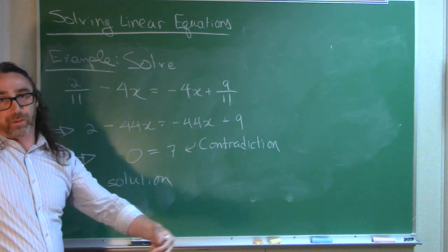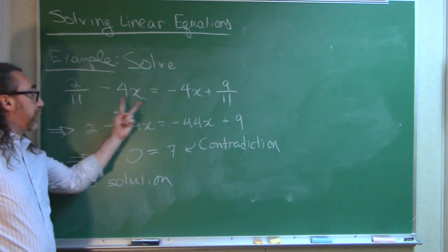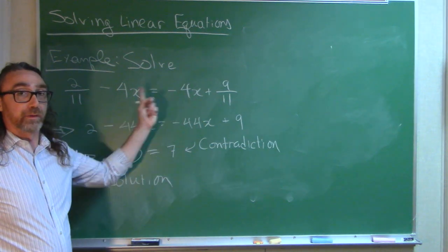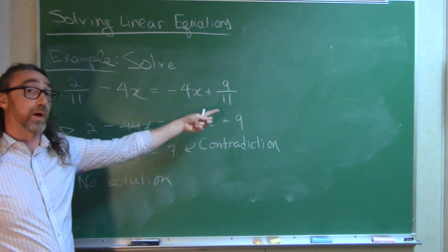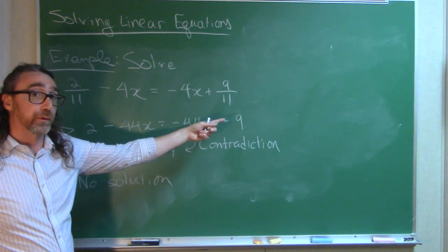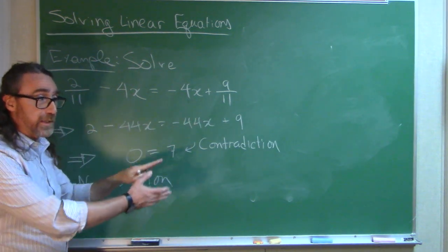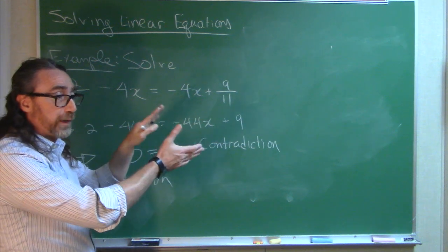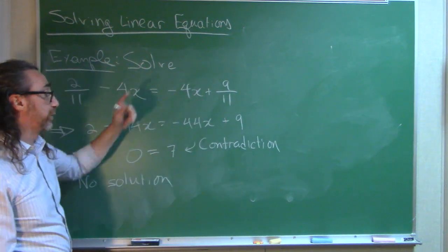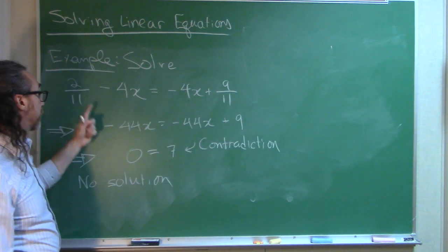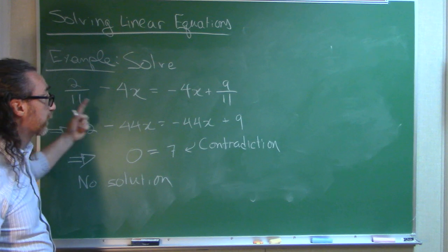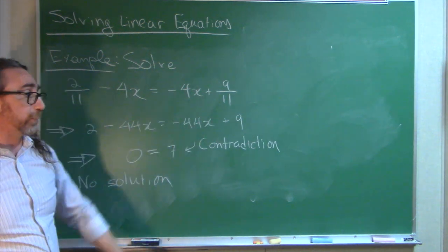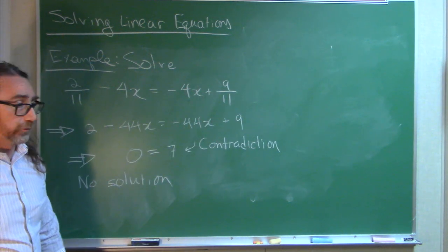Graphically, that corresponds to the two lines being parallel. They've got the same slope but different y-intercepts. Same slope means they're rising at the exact same rate, so they will never touch if they start at different places. This line starts at 2 elevenths, this one starts at 9 elevenths, so the lines will not cross.